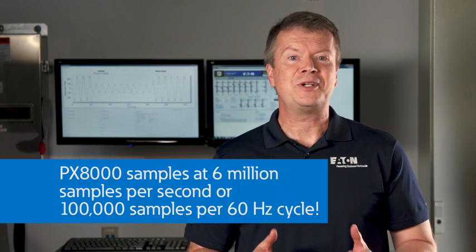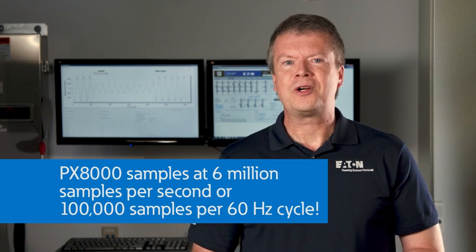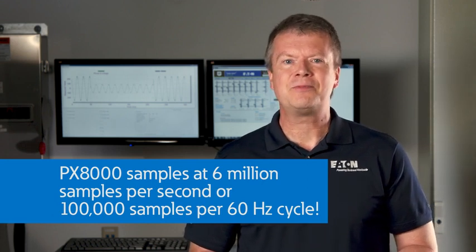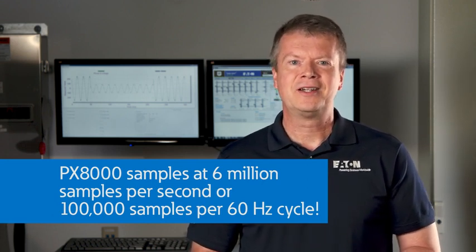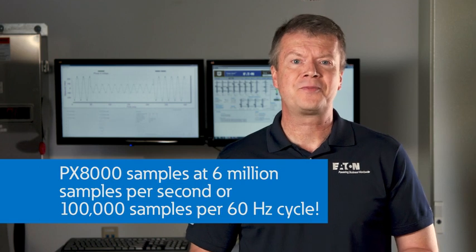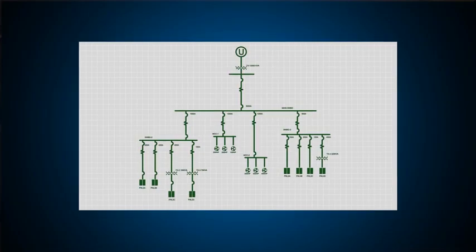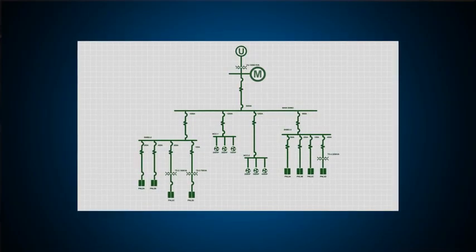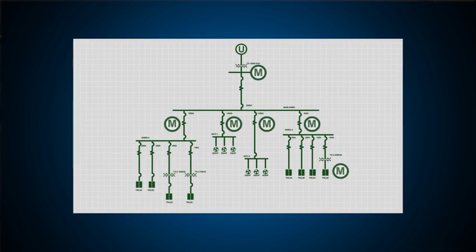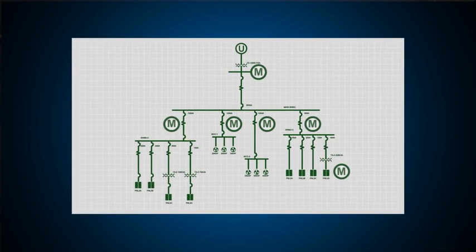And don't worry that you're missing anything. With the power expert 8,000, additional hardware allows the meter to capture data at 6 million data samples per second — fast enough to capture a lightning strike. Strategically placing a power expert 8,000 at your incoming service or critical loads can help you determine what may be happening to your system.